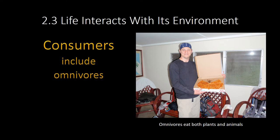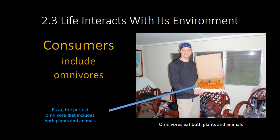Now you and I, we are omnivores. If an herbivore eats plants and a carnivore eats animals, omnivores eat both plants and animals. Humans are a great example of an omnivore. Pizza is a perfect diet for an omnivore — if you get meat on it, you've got meat from a pig, bird, or cow. You also have marinara sauce from a plant, and the crust is also made from plants. So omnivores like pizza because it has stuff from both plants and animals.